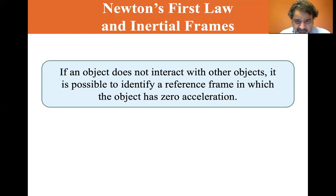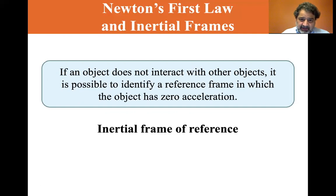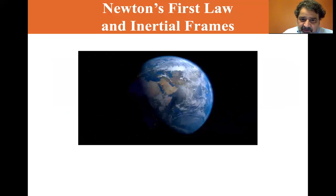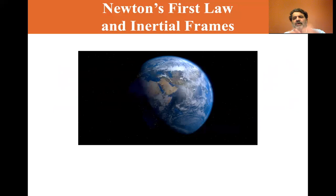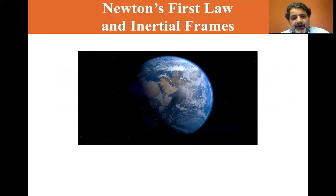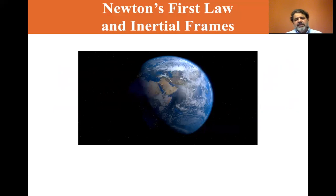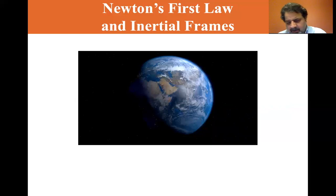What is the inertial frame of reference that we use? We use the Earth. Now it's true that the Earth is rotating, and not only is it rotating, but it's spinning around the sun. But compared to the gravitational acceleration, those accelerations are minor. So we use the Earth as our inertial reference frame.